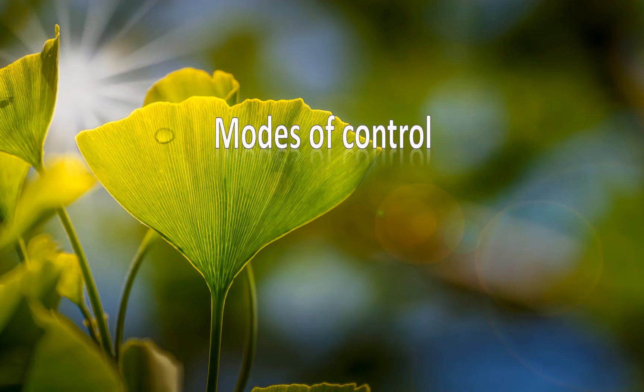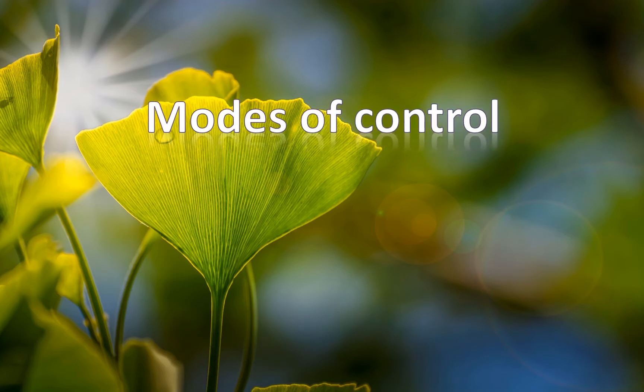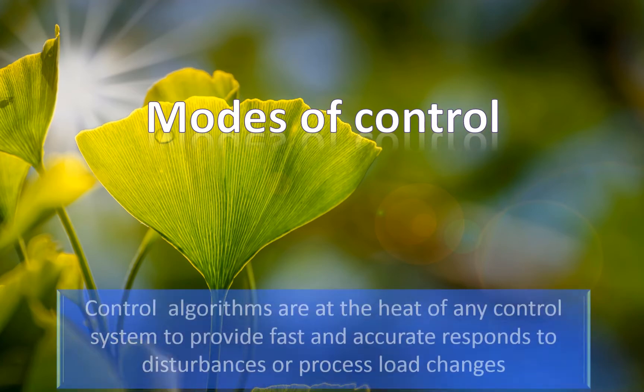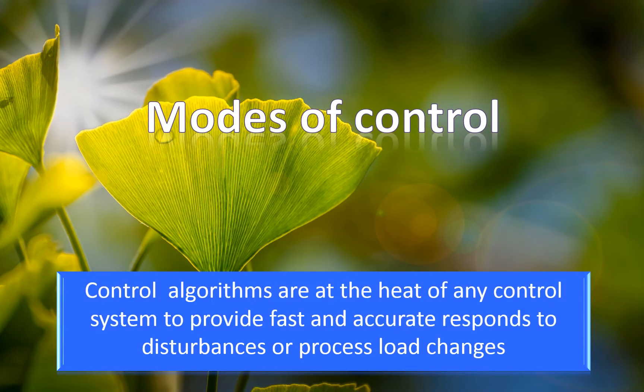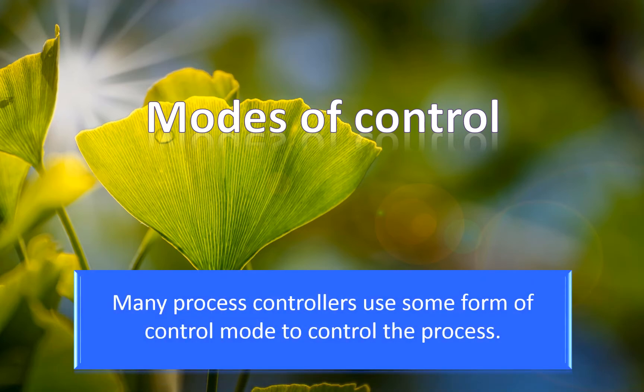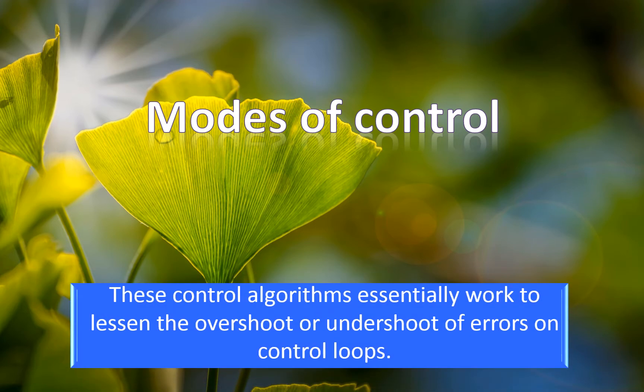Control algorithms are at the heart of any control system to provide fast and accurate response to disturbances or process load changes. Many process controllers use some form of control mode to control the process. These control algorithms essentially work to lessen the overshoot or undershoot of errors on control loops.